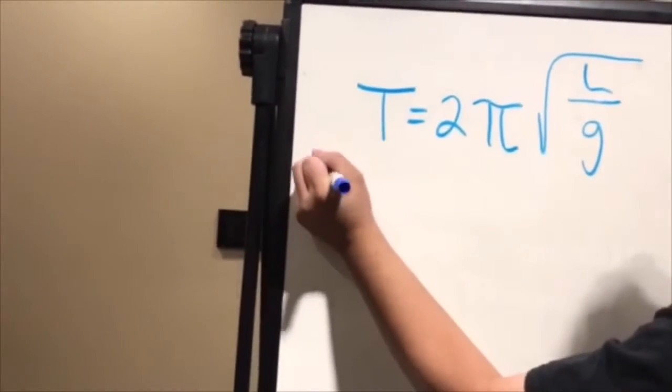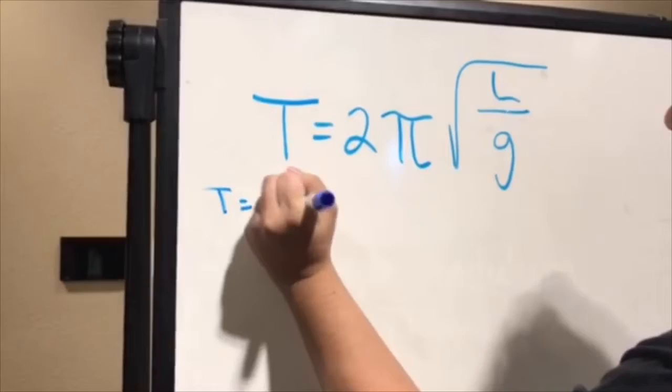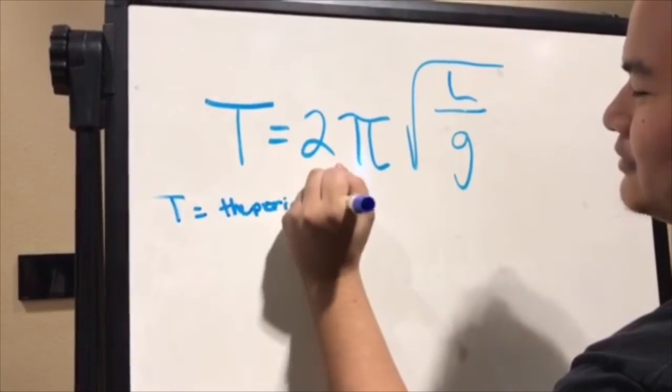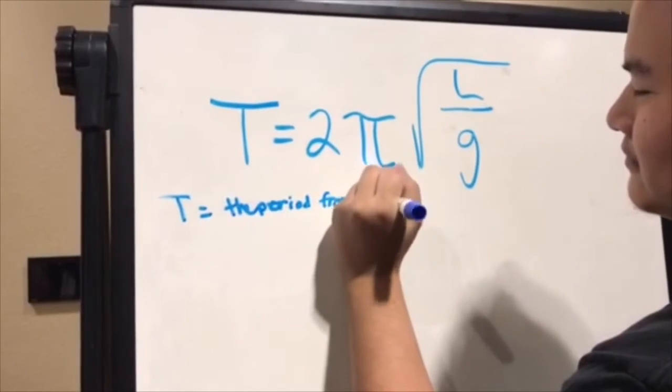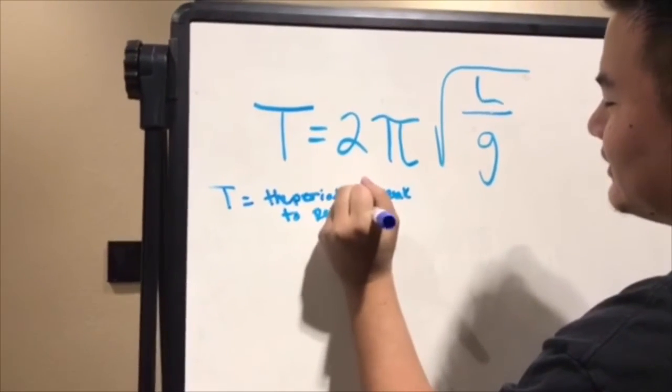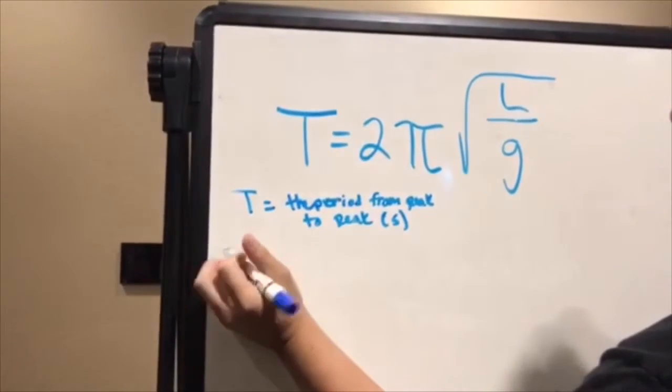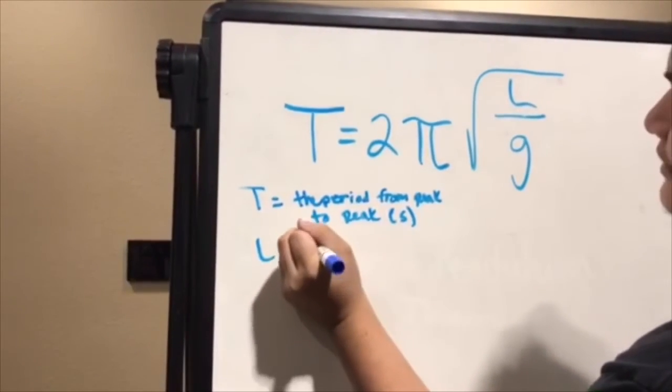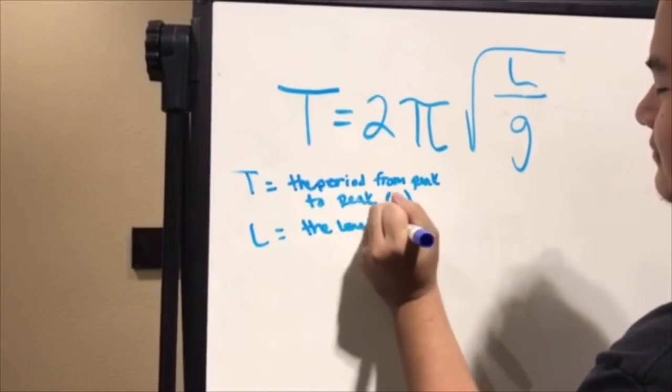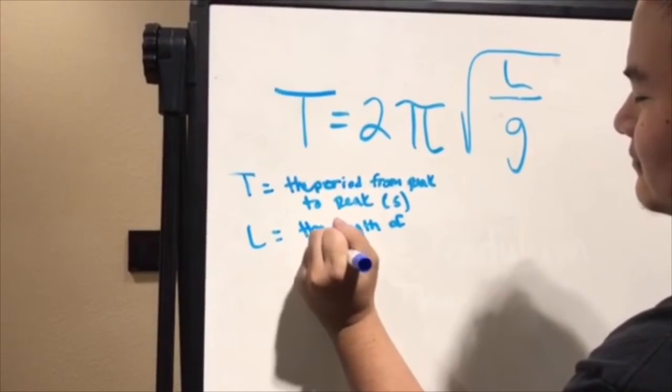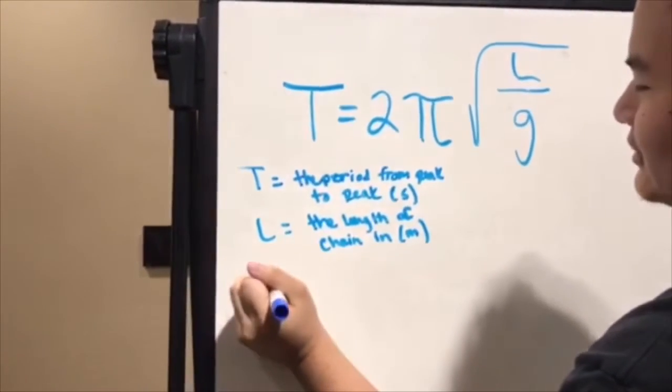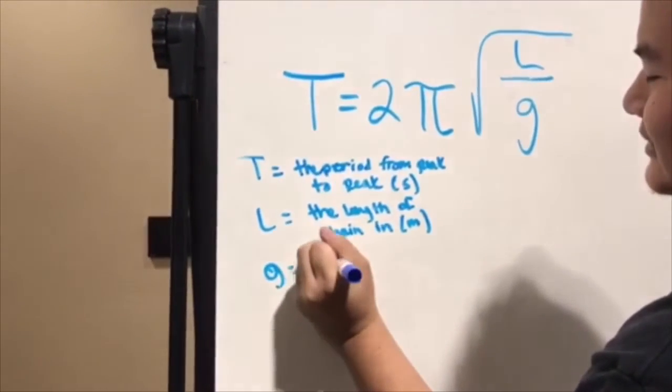Where T equals the period from peak to peak in seconds, and L is the length of the chain in meters, and G is free fall acceleration.